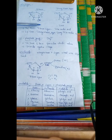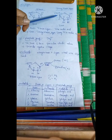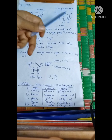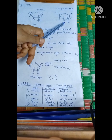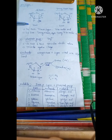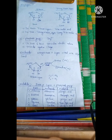Deoxy means removal of oxygen — we are removing the oxygen from the second carbon of the ribose sugar. Finally, we get deoxyribose sugar. So ribose sugar is used in RNA and deoxyribose sugar is used in DNA.